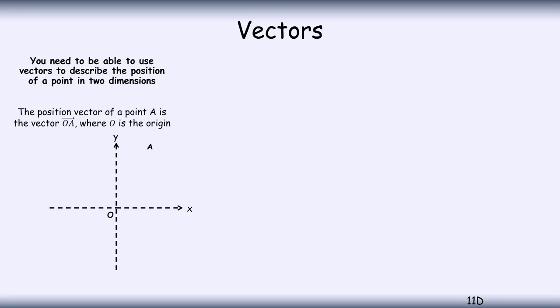If we draw the position vector A, its vector is OA, always starts on the origin. You look at the position vector B, its vector is OB.